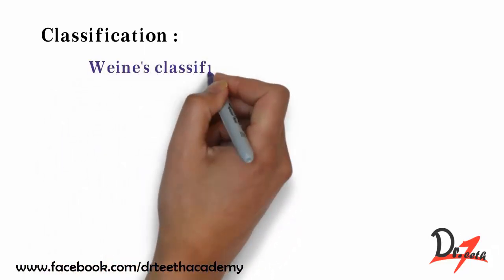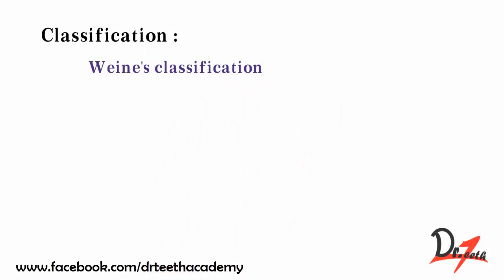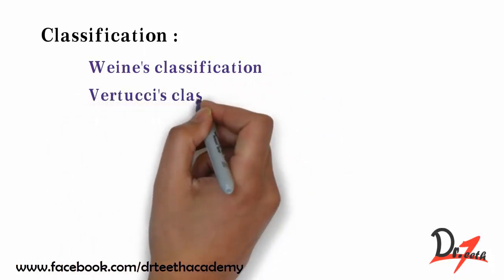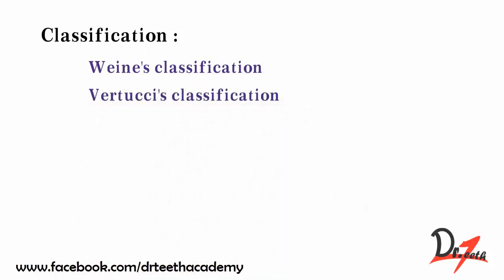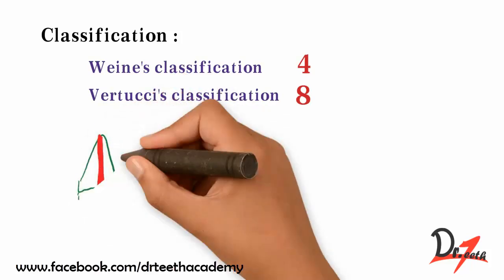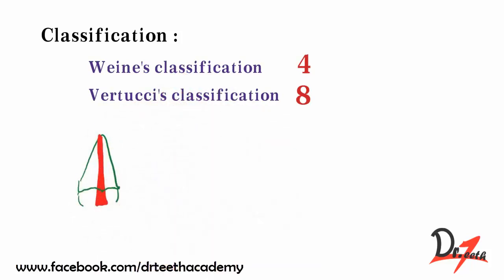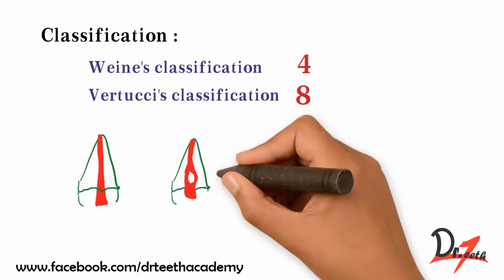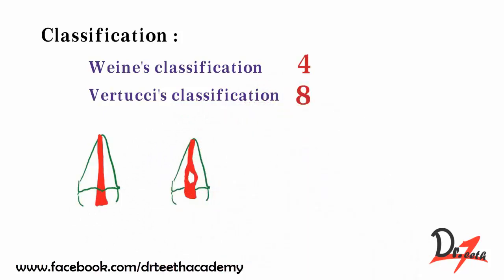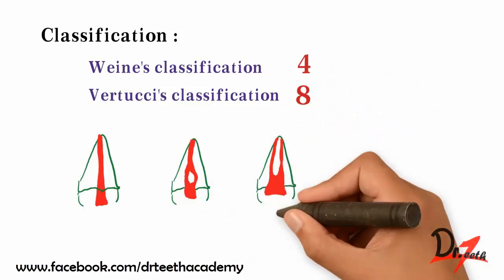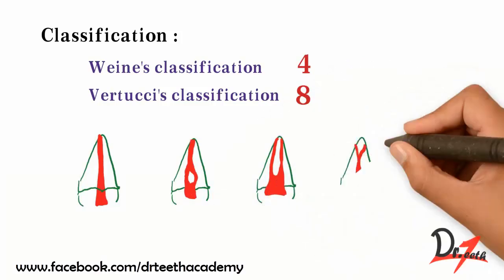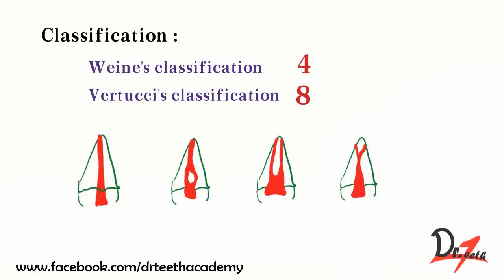These variations have been classified; two main classifications are Vertucci's classification and the extended version. Vertucci gave four types and the extended version has eight. Type 1: single canal. Type 2: two canals that join to form one. Type 3: two separate canals. Type 4: one canal which bifurcates to form two canals.